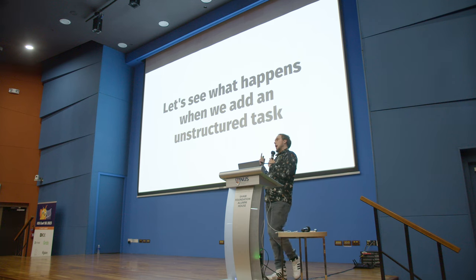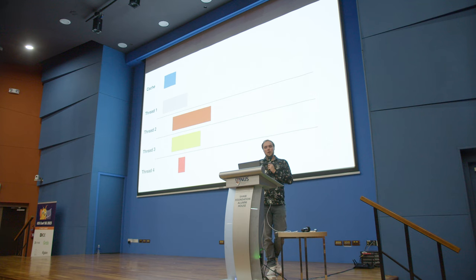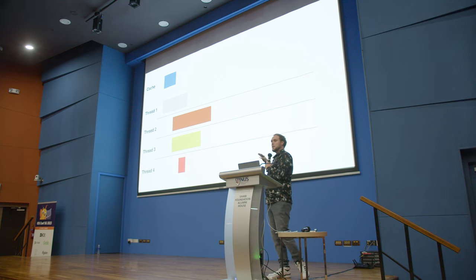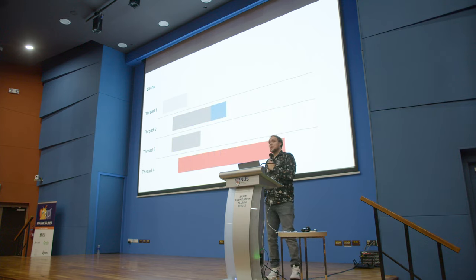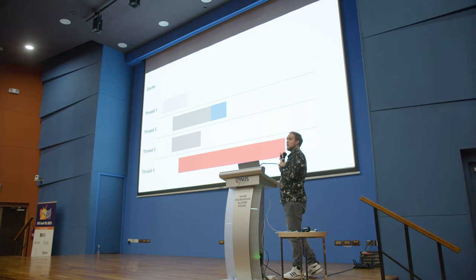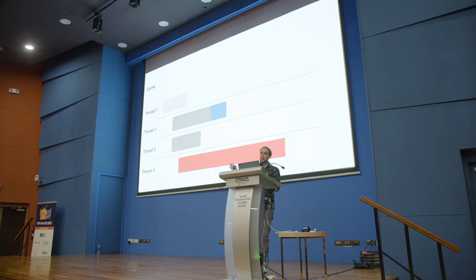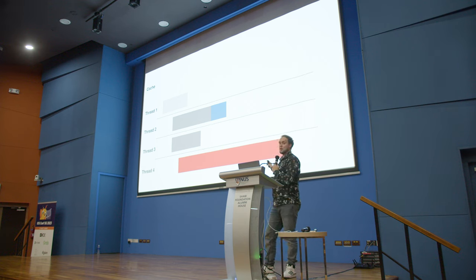With unstructured tasks, if everything in the parent completes, the unstructured task — the red block — could still be running. This would be very common in code that uses async sequences if you're not managing them. If you start iterating over an async sequence in a task and you don't stop the task when it's no longer needed — like when your view goes off screen — you would keep the task alive because you probably started it in an unstructured task. That's completely fine, but you do need to think about how it stays alive for a very long time.